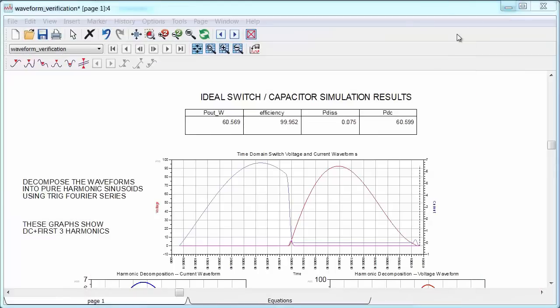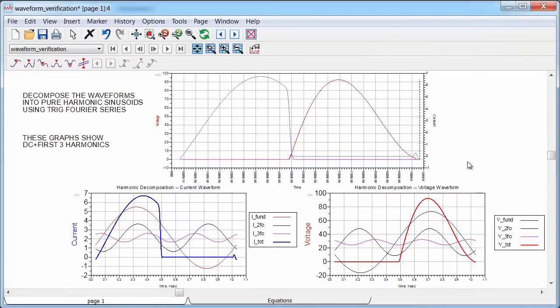So first, let's look a little closer at what this switching topology really does, and I think trigonometric Fourier analysis is very useful here. So let's take the simulated class E voltage and current waveforms and break them down into their harmonic components.